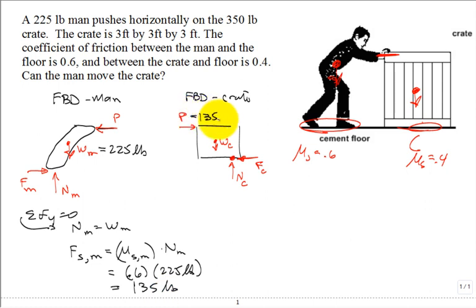We come over here, so now we know this is 135 pounds. The sum of the forces in the x equal to zero, so the force P is now 135 pounds. We come down to the crate: 135 pounds pushing at the top, and we know the weight of the crate is 350 pounds. You can find what x is.